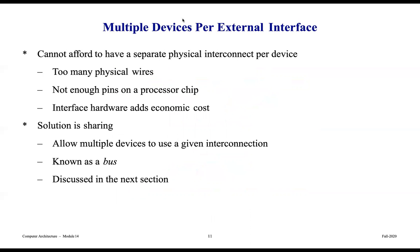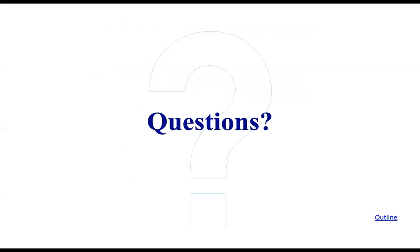What about multiple devices per external interface? We cannot afford a separate physical connection per device — that would require too many wires, there aren't enough pins on a processor chip, and interface hardware adds economic cost. The solution is sharing: it allows multiple devices to use a given interconnection. This is known as a bus, which will be discussed in detail in the next section. That's all we'll cover for this introduction.